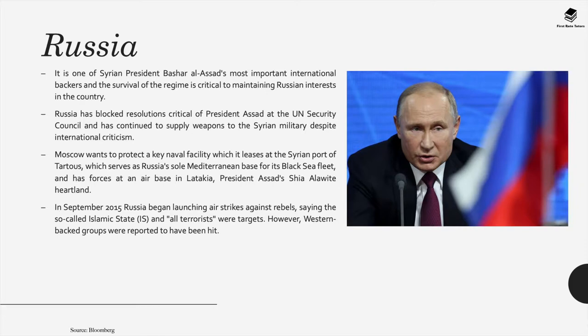Russia also has forces at an air base in Latakia, President Assad's Shia Alawite heartland. In September 2015, Russia began launching airstrikes against rebels, saying the Islamic State and all terrorists were targets. However, Western-backed groups were also reported to have been hit.